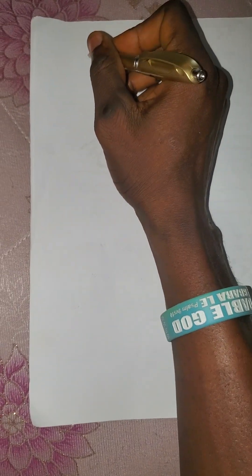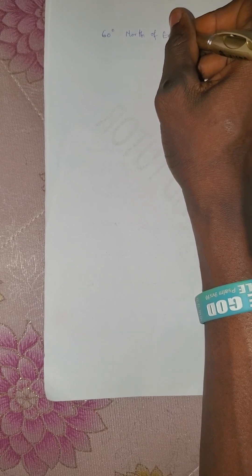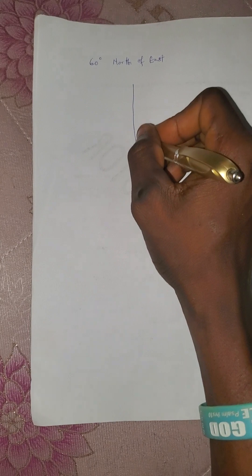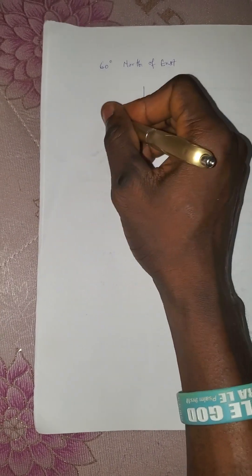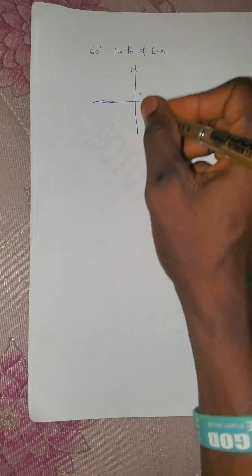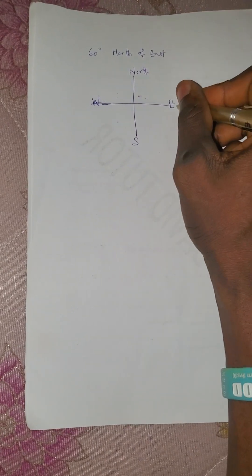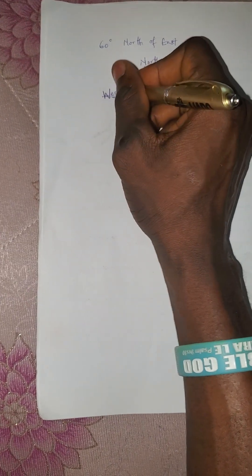Welcome to another video on vector resolution. In this video we'll be looking at how you resolve vectors. The first case is if you are given something like '60 degree north of east.' Each quadrant is 90 degrees, and we have north, south, east, and west. Now, '60 degree north of east' — this is the first case.